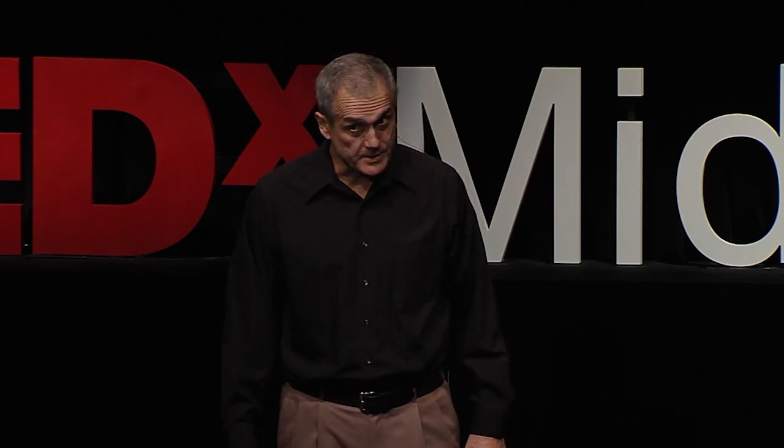We can witness animal evolution. In these two examples, it's the evolution of a special group called the fastest athletes — 100-meter sprint and 100-meter freestyle. Records go up, meaning speeds increase, but along the way the body masses of the winners increase. The relationship between the two is the same solid line as the one discovered earlier for all animals, runners and swimmers.